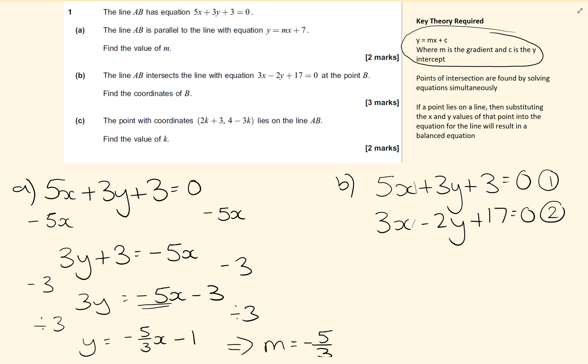Now I'm going to go for the 6y method. So I'm going to need to double the first equation, giving me 10x plus 6y plus 6 equals 0. And I'm going to be timesing the second equation by 3. So equation 2 gets multiplied by 3.